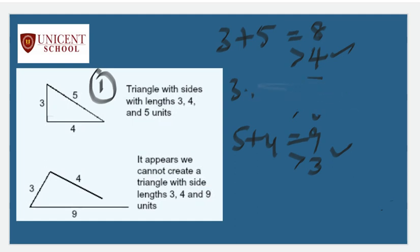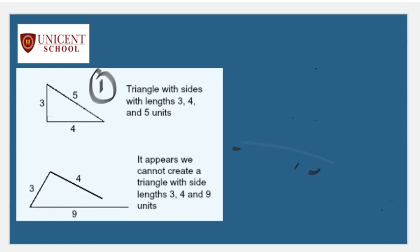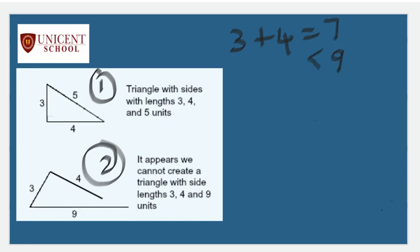Let us take another example and check whether the inequality property is satisfied in the second triangle. In this triangle, 3 + 4 = 7, which is less than the third side - this breaks the inequality property. We always need to check that the sum of any two sides must be greater than the third side. Since this condition is not met, the triangle with such measurements is not possible to construct - it would result in an open figure.